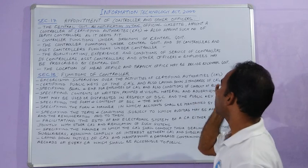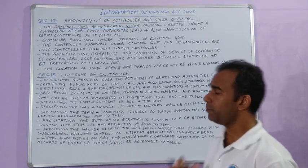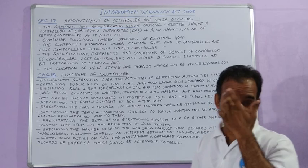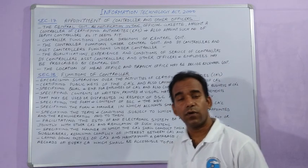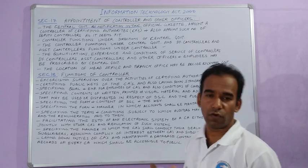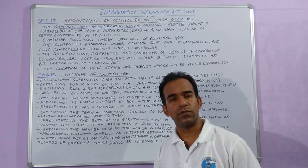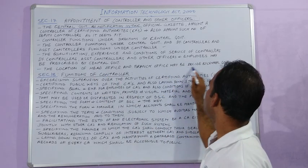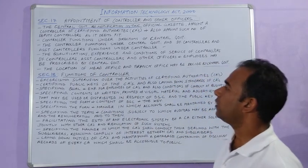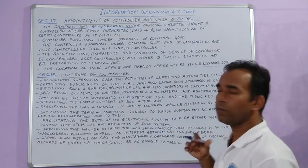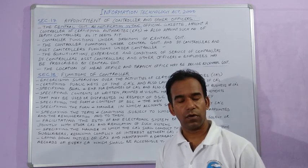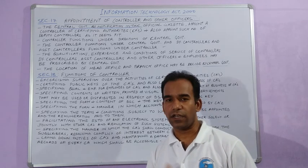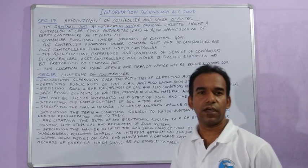The qualifications, experience and conditions of service of controllers, deputy controllers, assistant controllers, and other officers and employees may be prescribed by the central government. So who decides the qualifications and experience required — that is decided by the central government for all staff. The location of the head office and branch office may also be decided by the central government, just as, for example, the National Green Tribunal's seat location is decided by the central government.